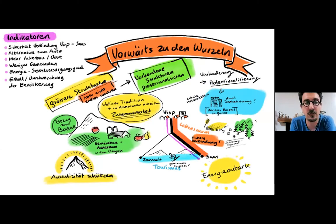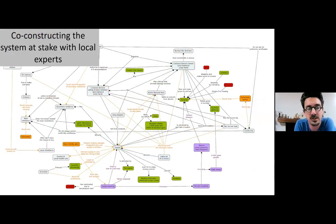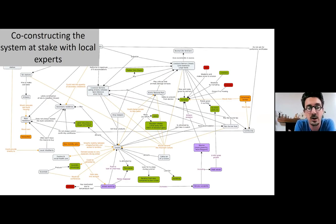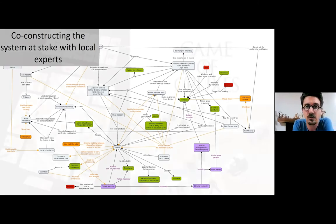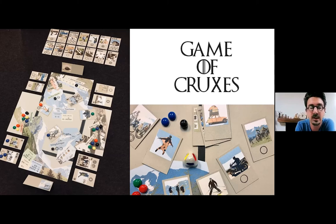For example, we designed a vision for Swiss and French alpine communities about what they want in the future, using a graphic designer to really engage with what they wanted. We then held workshops to describe how their social-ecological system works — bringing experts around the table to describe the most meaningful interactions on the ecological and social side. Together with this conceptual model, we designed the game Cruxes, a device to explore pathways to the vision along dimensions such as agriculture, tourism, and habitability.